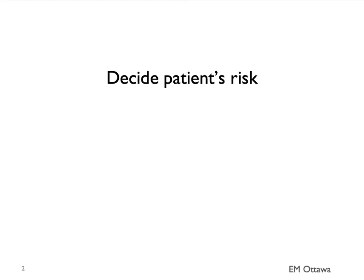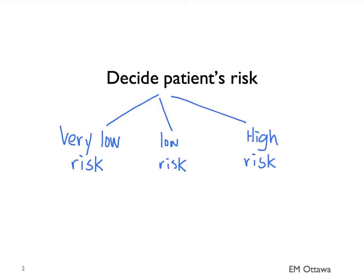We start off by deciding the patient's risk. They can be very low risk, low risk, or high risk. Depending on what risk category the patient is in, we will use different tests to rule in or rule out a PE.